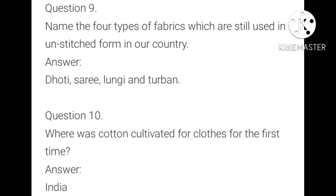Name the four types of fabrics which are still used in unstitched form in our country. Dhoti, lungi, and turban are fabrics which are still used in unstitched form. Where was cotton cultivated for clothes for the first time? In India, the cotton was cultivated for clothes for the first time.